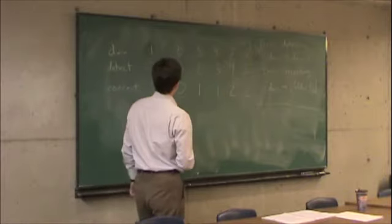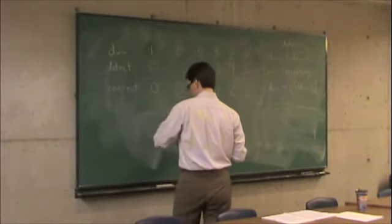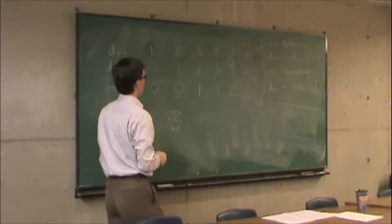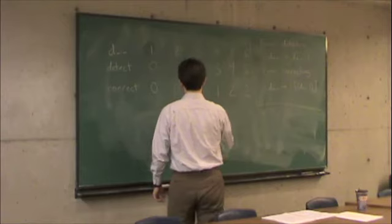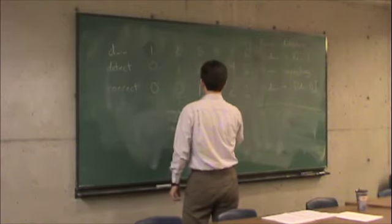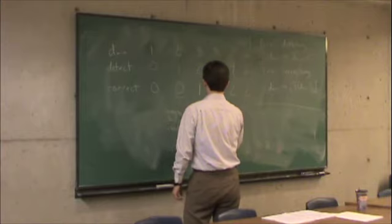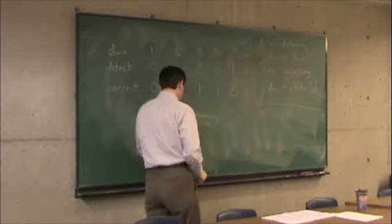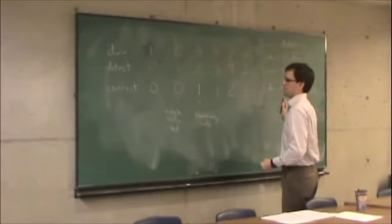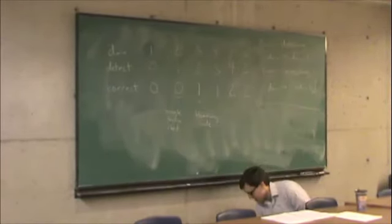So today we're actually going to construct, hopefully if we have time, a code of minimum Hamming distance three to correct a single error, and this we call the Hamming code. But first, let me finish off something I talked about last time.